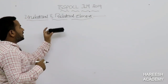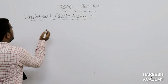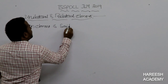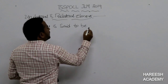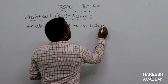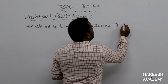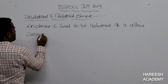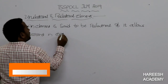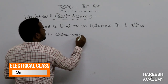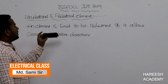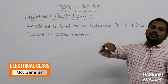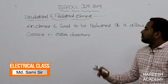We consider the unidirectional element. Now, the bidirectional or bilateral element. An element is said to be bilateral if it allows current in either direction — in two directions. We call it a bilateral element.